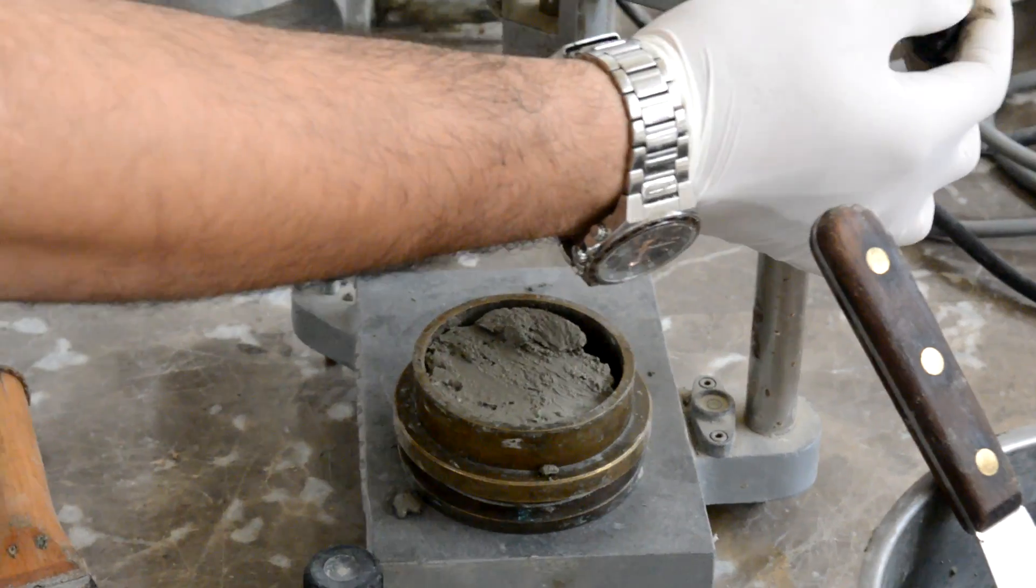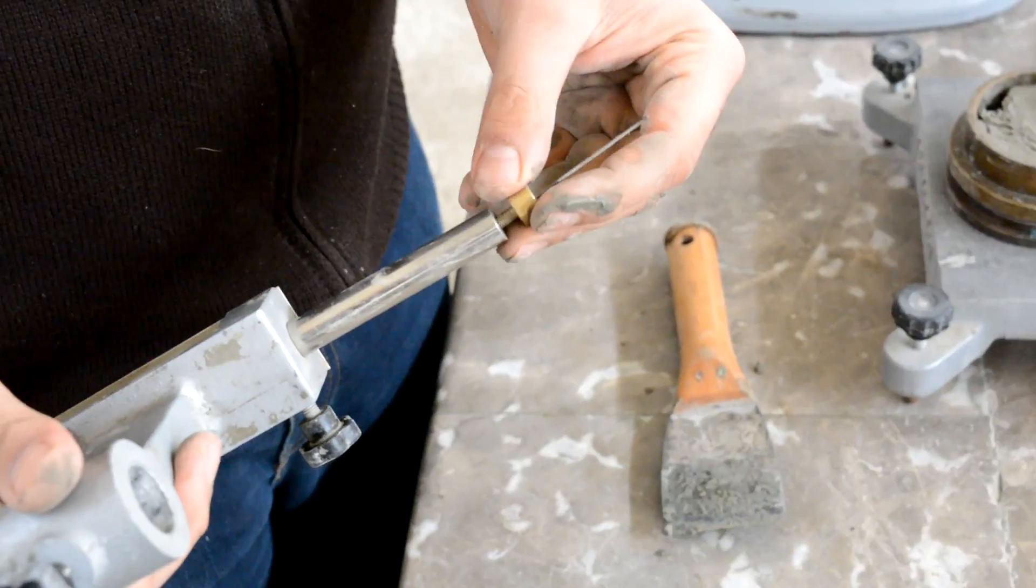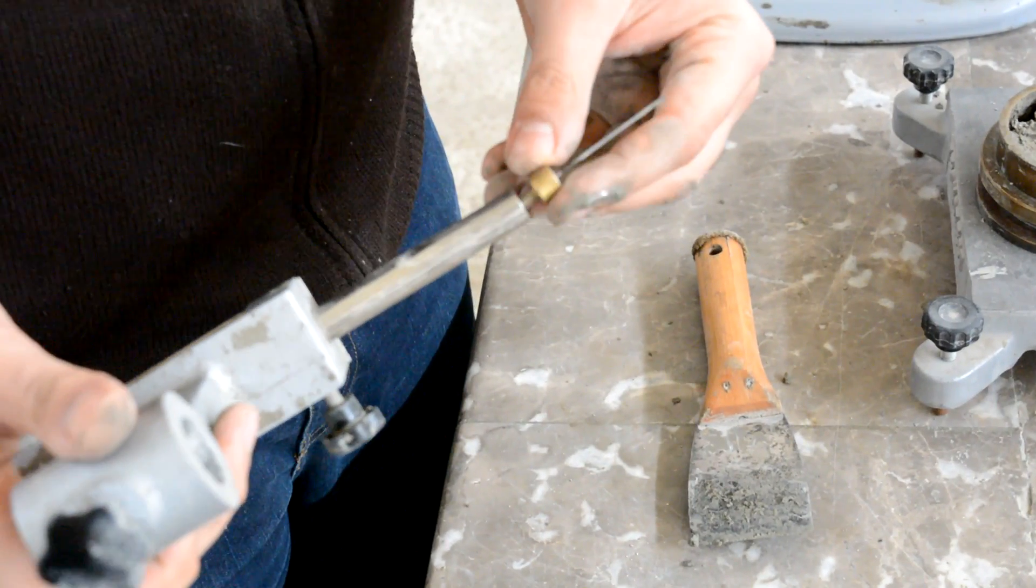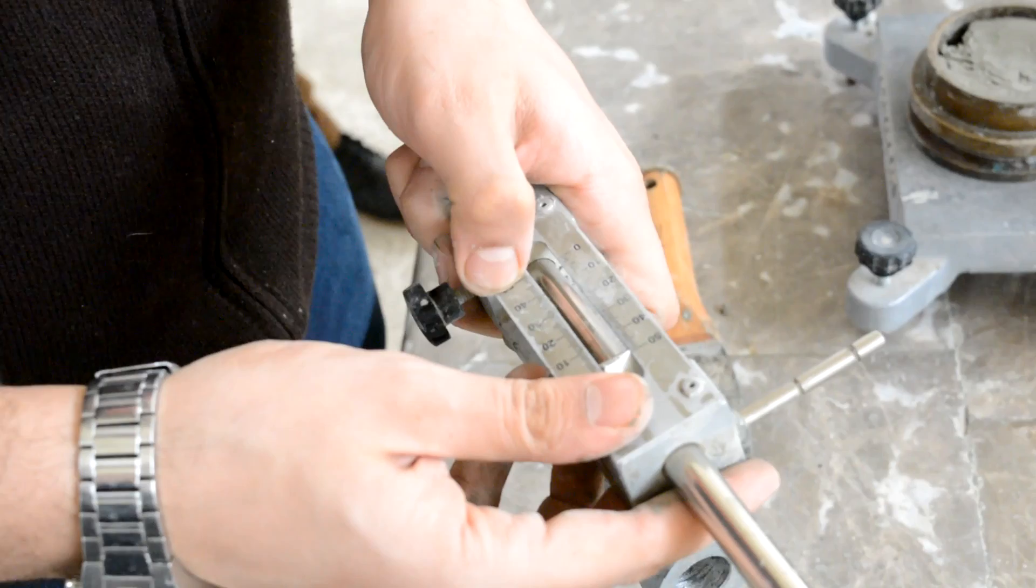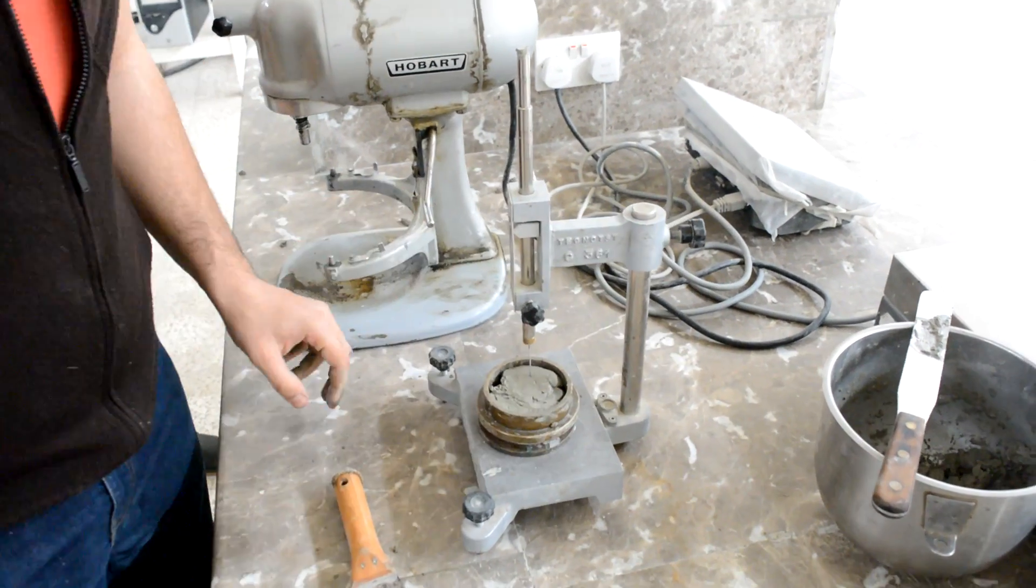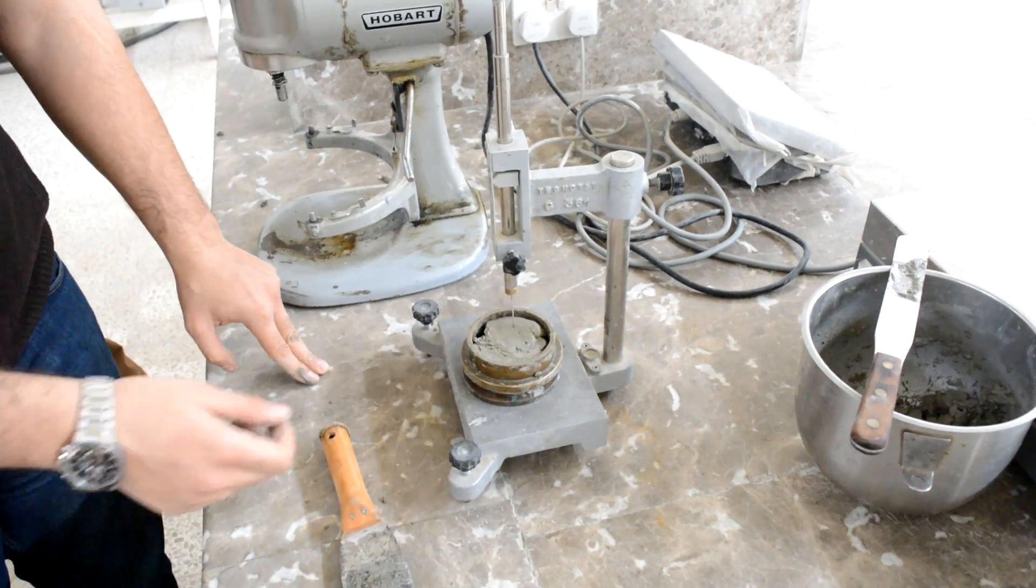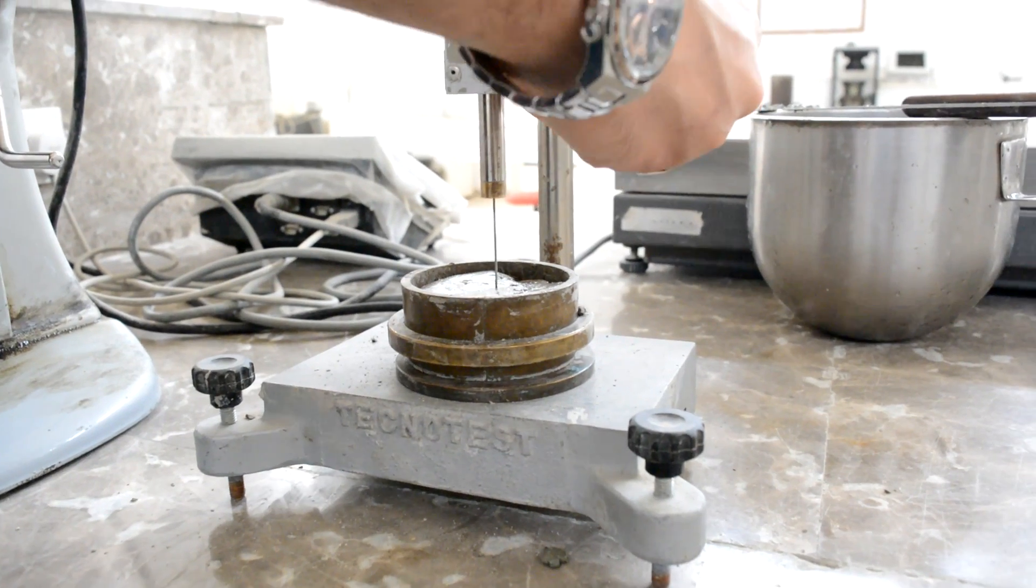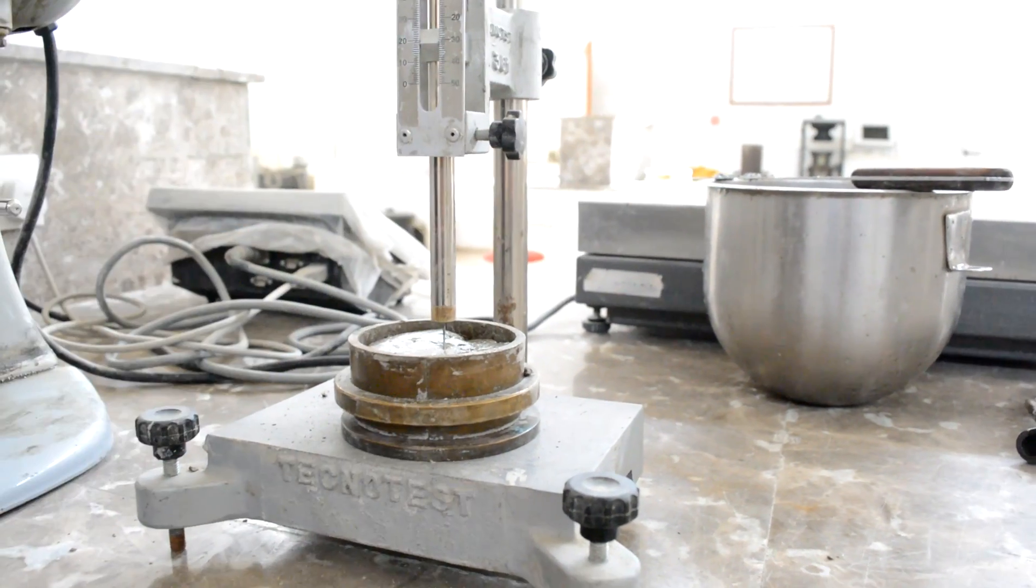Place the thin needle on the Vicat apparatus and set the indicator to zero. Adjust the needle until it becomes in contact with the paste surface. Release the needle; the needle will penetrate the paste.